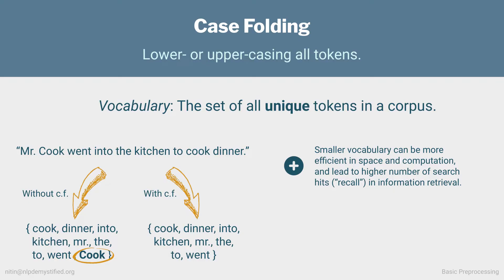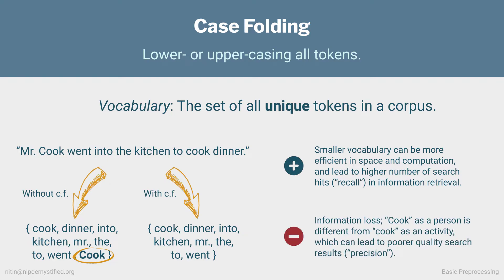In information retrieval, this could also lead to a higher number of search hits or increased recall. Despite that, most of the time pipelines often skip this step, because case folding can result in information loss. For example, cook as a person's name and cook as a person's job would be folded into the same token, which may not be something we want. If we're searching for information on cook as a person, we don't want to be flooded with hits on cook as an activity. So with case folding, the amount of information we retrieve may go up, but the correctness of the information may go down — we would have decreased precision.